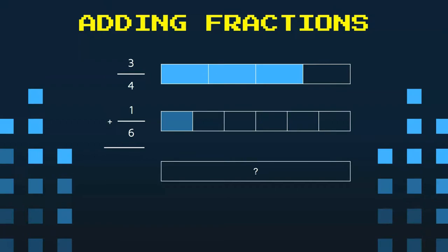Now if I tried to combine those into the third bar to figure out what the total is, I'd have a problem, and the problem is those pieces are not the same sizes. So I can't just combine them and then give a total.